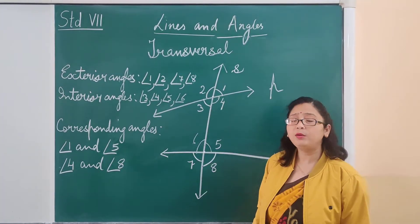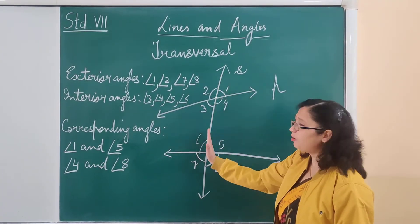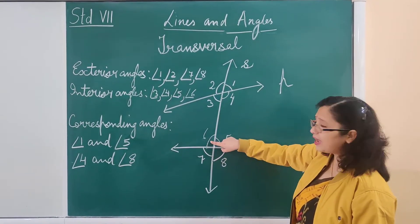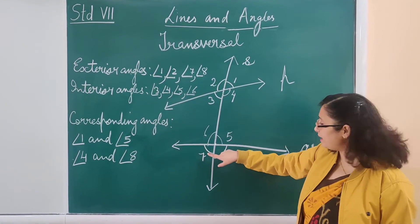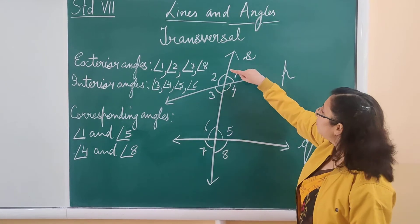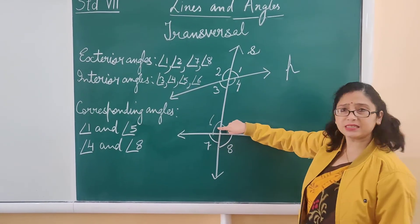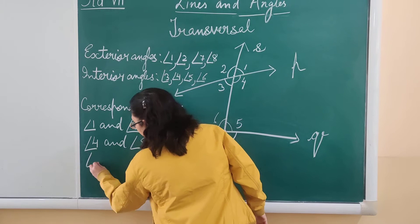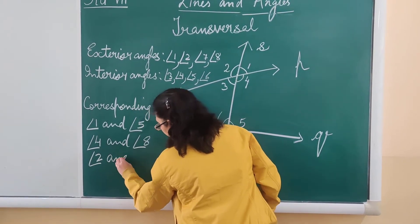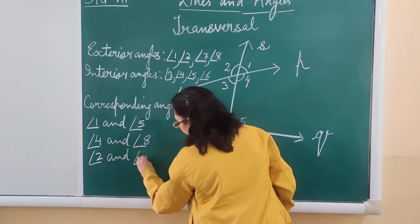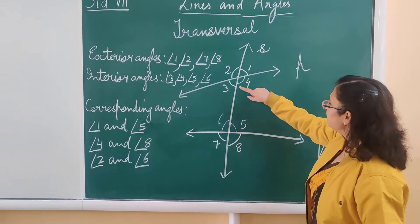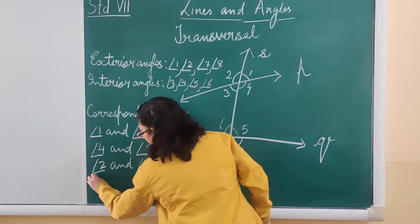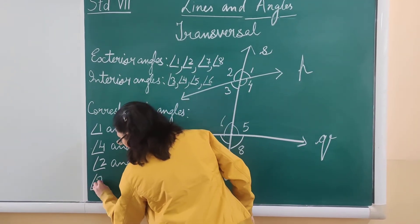On the left side of the transversal are angle 2, angle 3, angle 6, and angle 7. So angle 2 and angle 6 are corresponding angles, and angle 3 and angle 7 are also corresponding angles.